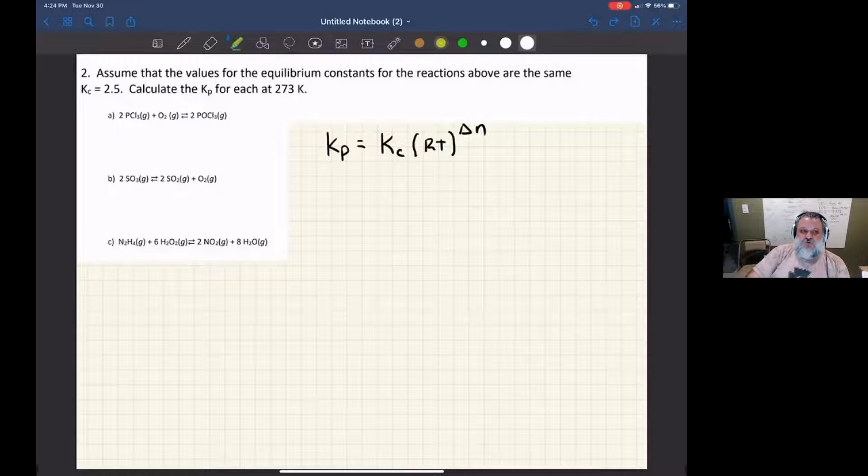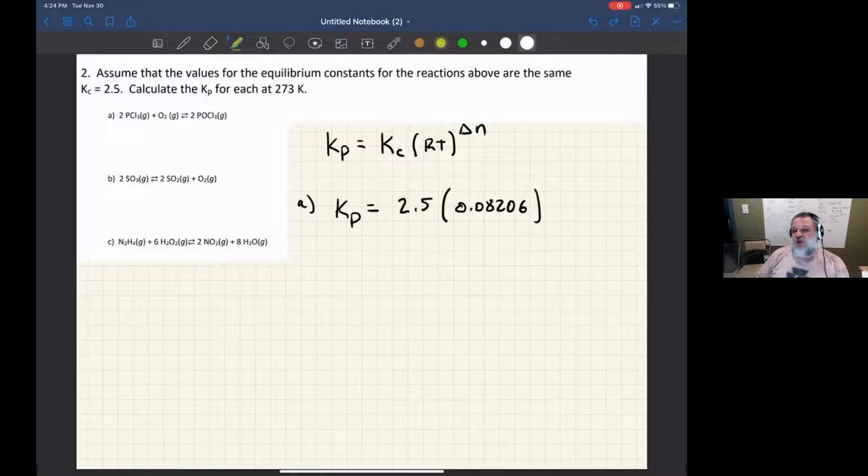So let's see how this worked out. We're going to assume that the Kc for all three reactions are going to be 2.5. And so let's do the first one. So Kp equals 2.5 times 0.08206. And this is going to be the first time that you're going to hear me say this, but just ignore the units. Equilibrium constants are unitless values.